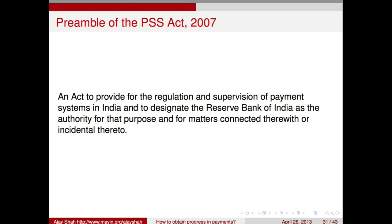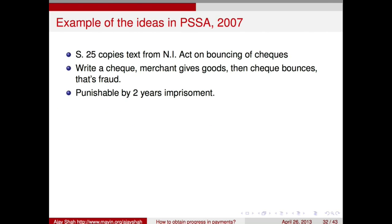Here is an example of low-quality thought that went into the Payments and Settlement Systems Act. Section 25 has been mechanically copied from the Negotiable Instruments Act on the subject of bouncing of cheques. When you write a cheque and give it to a merchant, that cheque is an implicit promise that money will be paid. The merchant trusts you, gives you goods, and later when the cheque bounces that is fraud — so the Negotiable Instruments Act made that punishable by two years of imprisonment. This has been mechanically copied into the Payments and Settlement Systems Act of 2007.